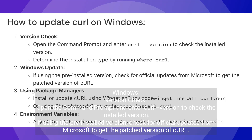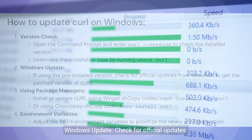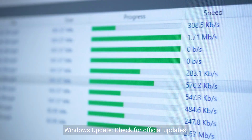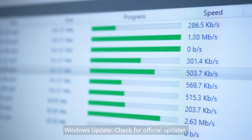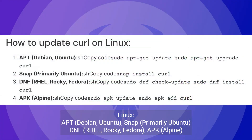For Windows, open the command prompt and enter curl --version to check the installed version. If using the pre-installed version, check for official updates from Microsoft to get the patched version via Windows Update.